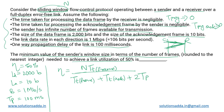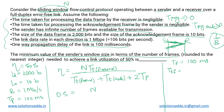Substituting the values: efficiency to be achieved is 50%, so we write 0.5 = N times T_t(frame) divided by the total time. T_p is already given as 100 milliseconds. For T_t of the data frame, it is L divided by B: the data frame size is 2000 bits and the bandwidth is 1 Mbps = 10^6 bits per second. This gives 2 × 10^-3 seconds, which is 2 milliseconds.